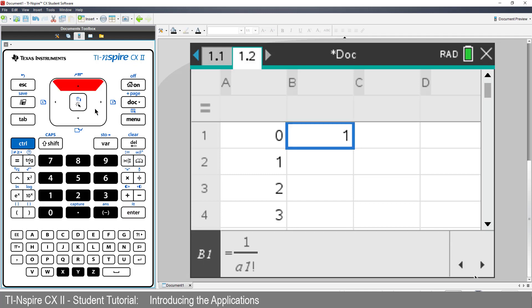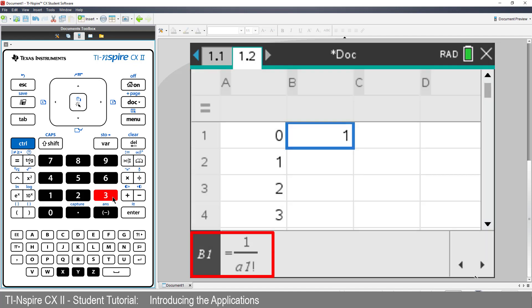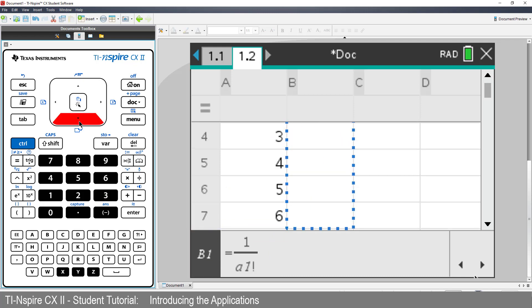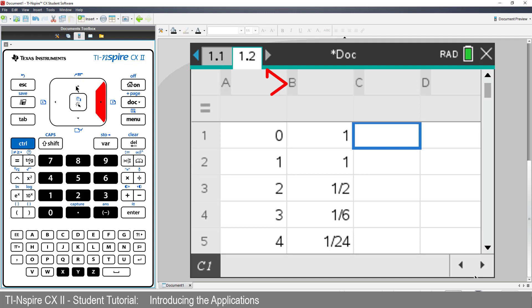Make sure it's only the denominator that has the factorial sign. Now we want to fill that expression down for the first 8 cells. Notice that the formula can be seen at the bottom of the screen. And the calculated result in the actual cell. The spreadsheet in TI Inspire works just the same as a regular spreadsheet. Now return to the top of the list. I'll give the list a name. I'll call it Data. I'll call the first list N.